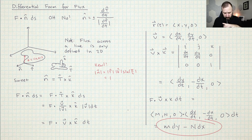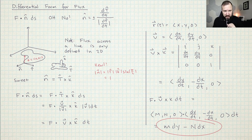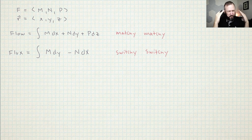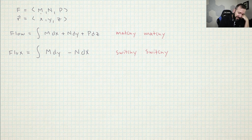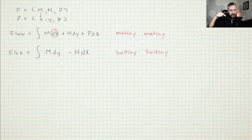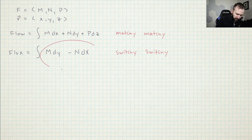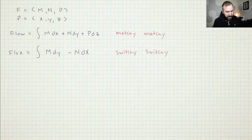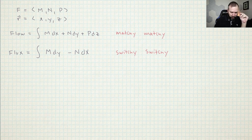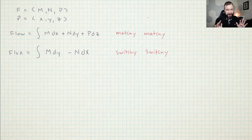I have a neat way of memorizing these and keeping them straight. For the flow differential form, M is in the X coordinate and it matches with DX — so the X coordinate matches with the X coordinate. I call this 'matchy matchy.' But when you do flux, you have to switch them: M goes with DY and N goes with DX. I call that 'switchy switchy.' Those are my memory tricks for keeping the two differential forms straight.